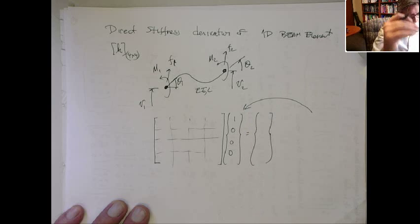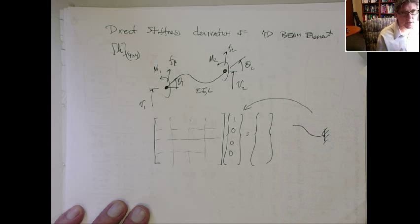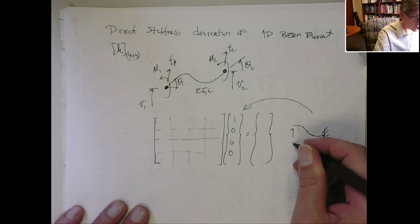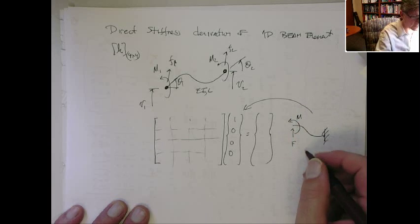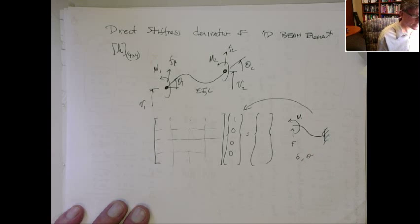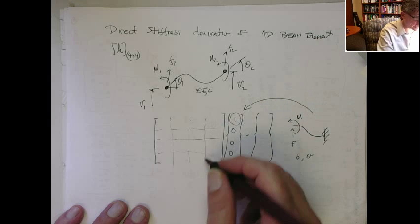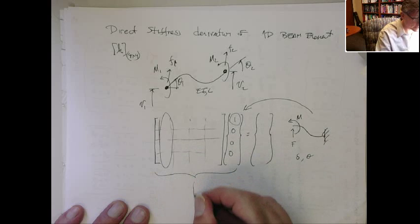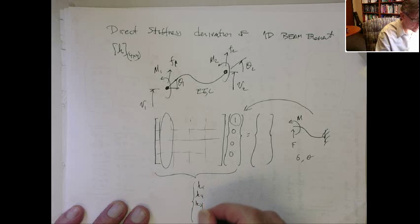The only thing that's happening is it's deflecting up one at node 1, so actually that beam basically looks something like this. It's that type of deflection pattern. We can actually figure out, using basically basic beam equations, what is the force and moment, and from that, you can get the deflection and the rotation at those points. Now, when you do that, what you get here, when you multiply this through on this side, is you just get this first column, because all the other effects go to zero. So this just becomes k11, k21, k31, k41.